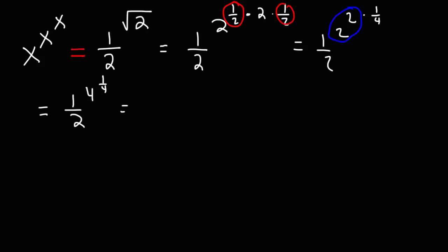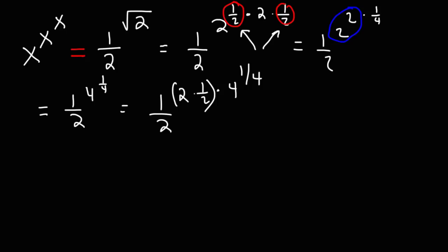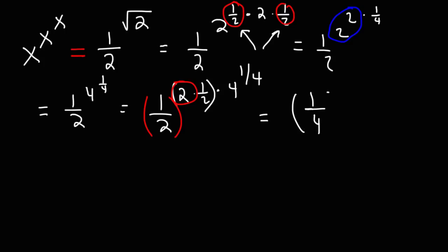Now we need to introduce more numbers using the same trick. We're going to multiply by 2 times one-half again, since that equals 1, and then it's times 4 to the one-fourth. We use this 2 to square the one-half: 1 squared is 1, but 2 squared is 4. So we have one-fourth raised to the one-half, times 4 to the one-fourth.